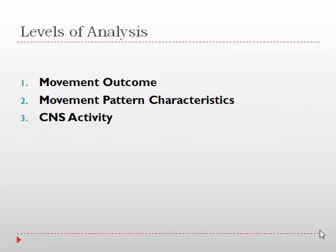So what exactly do I mean by levels of analysis? These are the dependent variables. We have three levels. The first is movement outcome, which gives us information about success or the effectiveness of a movement—the extent to which a movement achieves a goal. Whereas movement pattern characteristics look at more biomechanical as well as muscular activity characteristics. And then our third level of analysis is central nervous system, specifically brain activity.